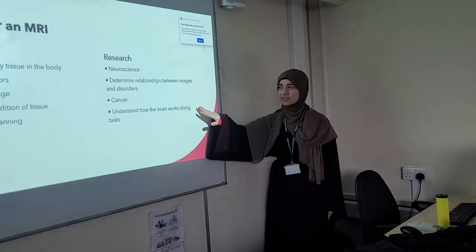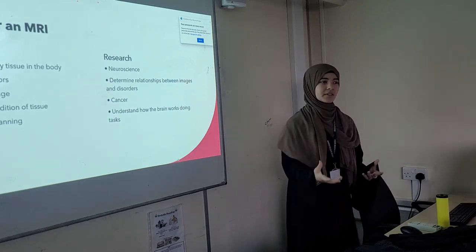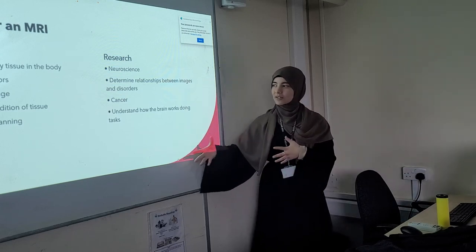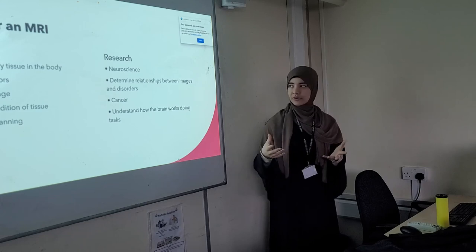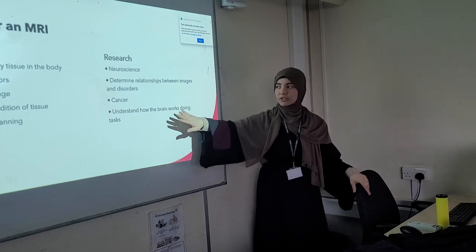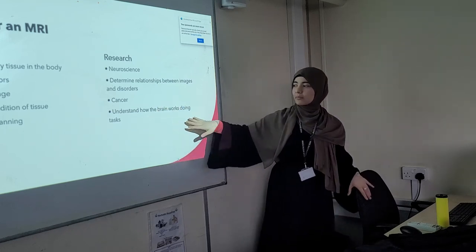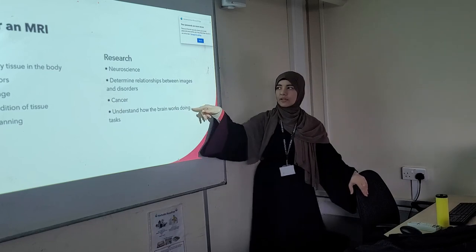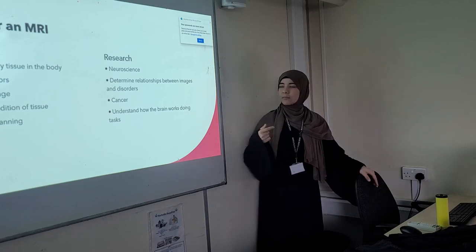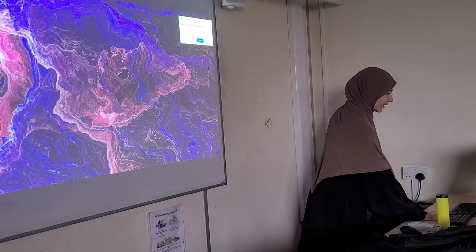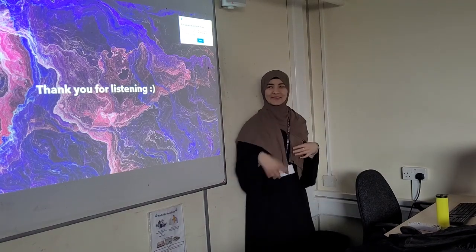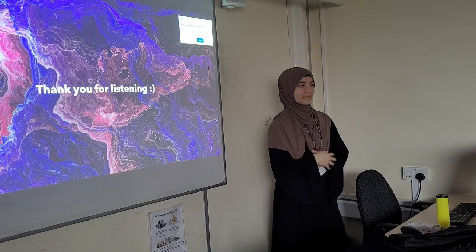Research can also determine relationships between images and disorders. If someone has dyslexia or ADHD, MRI allows for a more accurate diagnosis. It can also show cancer cells and which tissues are being affected. And it helps us understand how the brain works during tasks — tying back to neuroscience and conditions like dyslexia, ADHD, and autism and how they alter the brain.